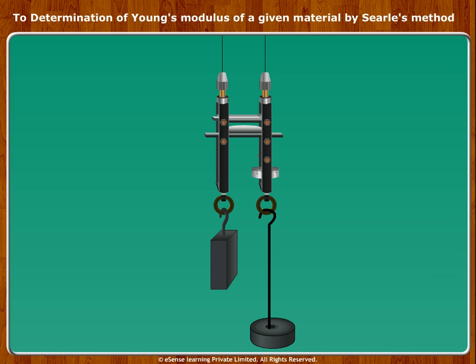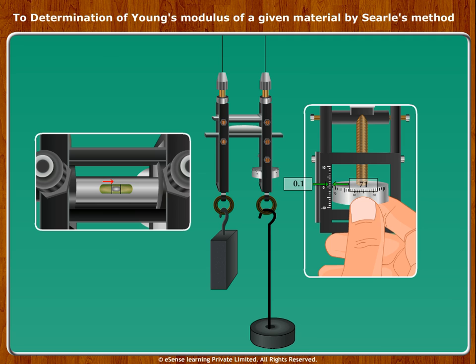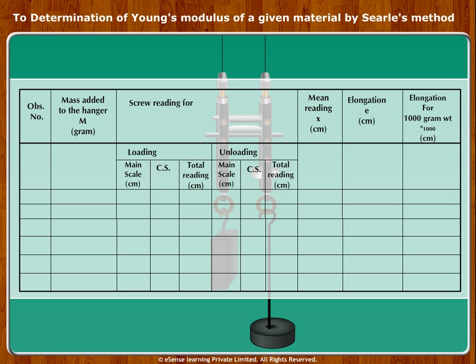To avoid backlash, the screw should be rotated in one direction. Note the direction of rotation needed to lower or to raise the tip of the micrometer screw. Adjust the screw so that the air bubble in the spirit level is at the center, meaning the spirit level is horizontal. Note the readings on the main scale and also the circular scale. Note these in Table 2.